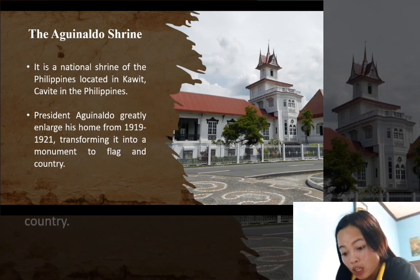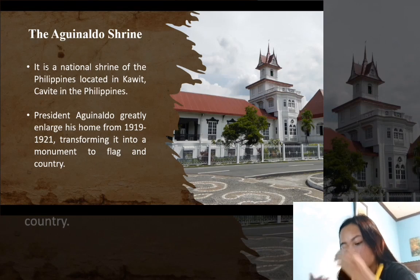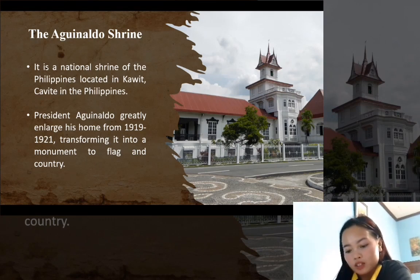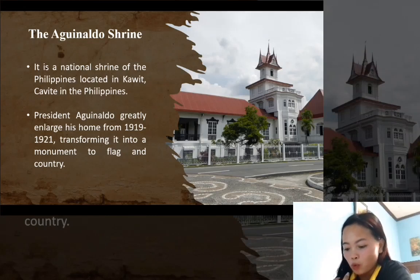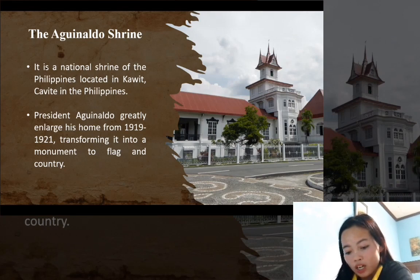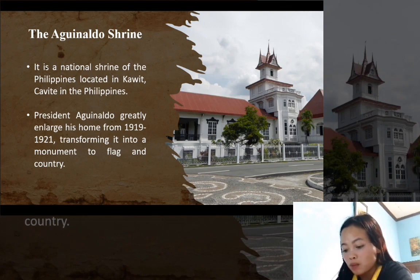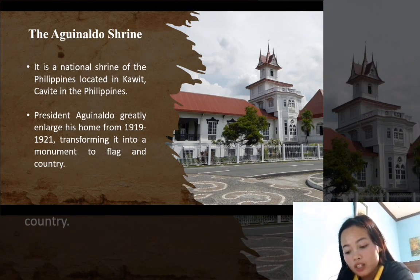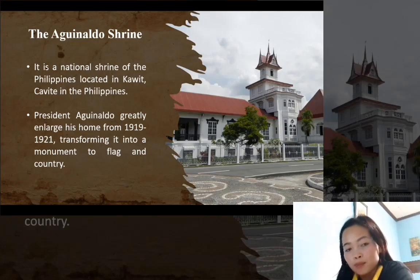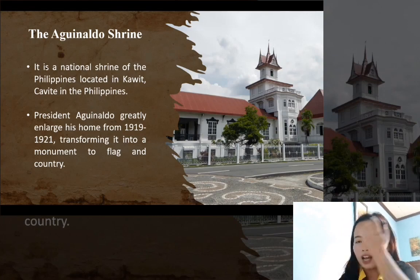On June 12, 1898, the independence from Spain was proclaimed from the windows of the Grand Hall. The Declaration of the Philippine Independence was read by its author, Ambrosio Rianzares Bautista. The Declaration of Independence was certified by the Malolos Congress on September 21, 1898. Aguinaldo died on February 6, 1964, at the age of 94, at the Veterans Memorial Medical Center in Quezon City. The same year, the government declared the mansion as a national shrine on June 18 through Republic Act 4039, signed by President Diosdado Macapagal.